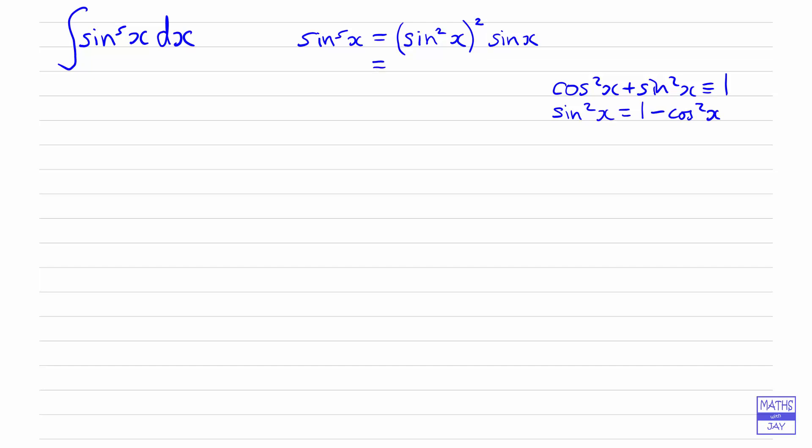So here, we can say that's going to be 1 minus cos squared x squared times sine x. Let's just move our identity out of the way. And then we've got space to multiply this out. So we've got 1 minus cos squared x multiplied by itself, so that's 1 minus 2 lots of cos squared x. And then cos squared multiplied by cos squared is going to be cos to the fourth x. So we've got a negative multiplying a negative there, giving us a positive. And of course, not forgetting that we've got sine x there as well.